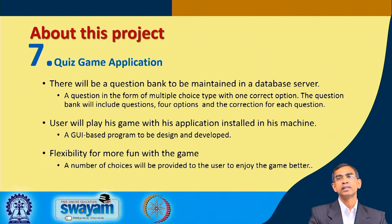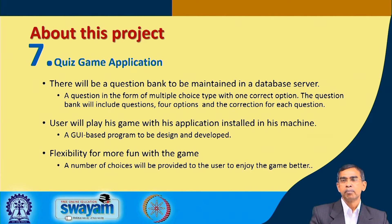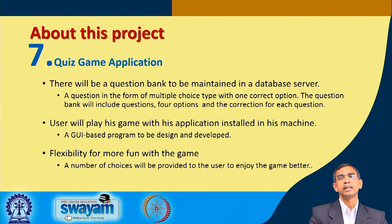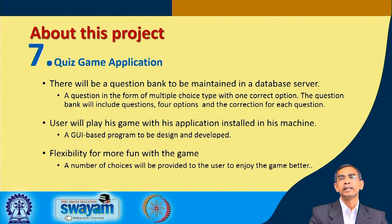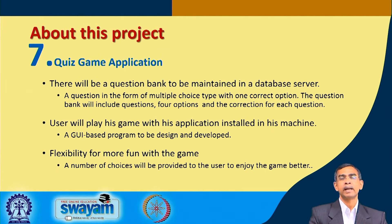The question bank server will be created and the user will be allowed to play the game. There should be a GUI developed by which the user can play — it will show questions, options, and a select button. The GUI program is basically the front end for the user. The database table will have one field for the question, four fields for the options, and a sixth field for the correct option, so the program can verify the user's selection.